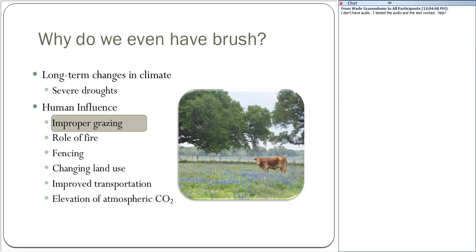We'll talk about why prescribed burning today doesn't necessarily create a solution for our brush issues. When we change land use, we develop different portions, and with improved transportation we've brought in some species that are more invasive than native species. There are also elevations in atmospheric CO2, which tends to favor the growth of brush species over grass species. But more importantly, I lean towards improper grazing and the suppression of fire as the primary reasons we have more brush today.